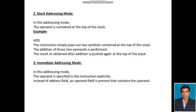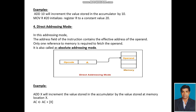Immediate Addressing Mode: In this addressing mode, the operand is specified in the instruction explicitly instead of an address field — an Operand Field is present that contains the operand. For example, 'Add 10' will increment the value stored in the accumulator by the value 10. 'Move R, 20' initializes the register R to the constant value 20.